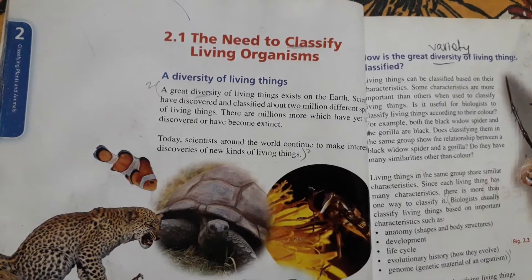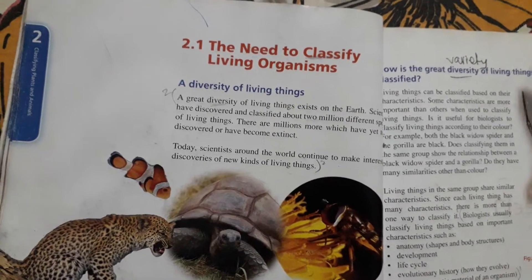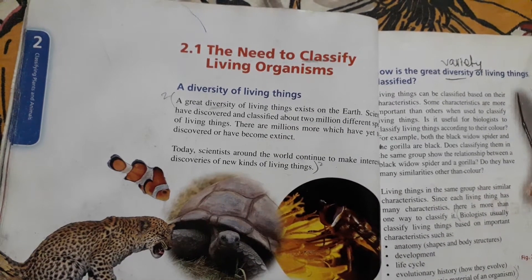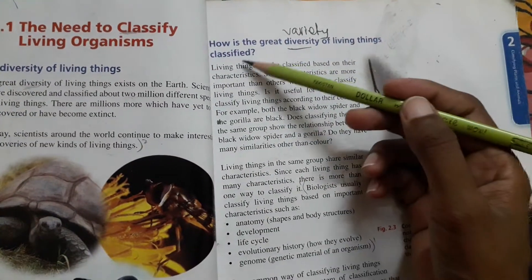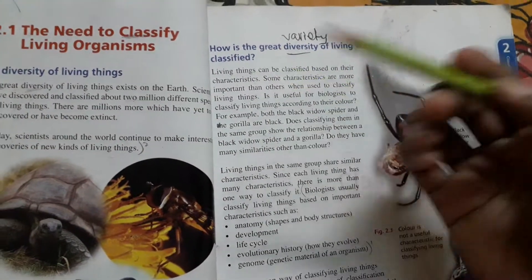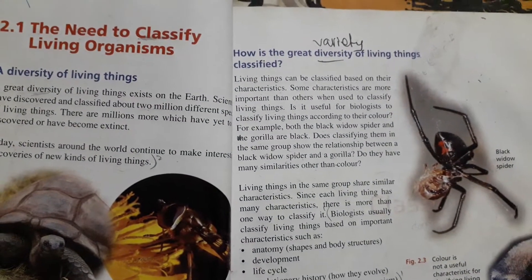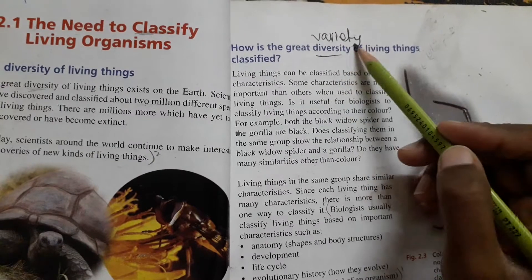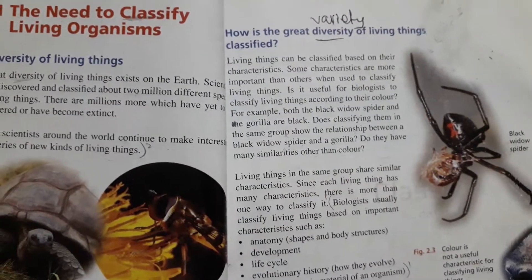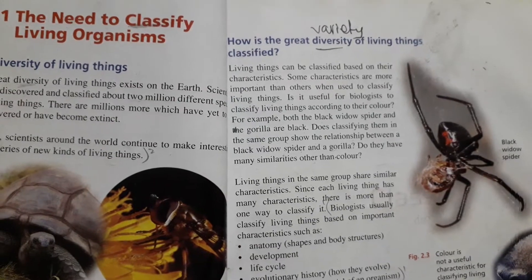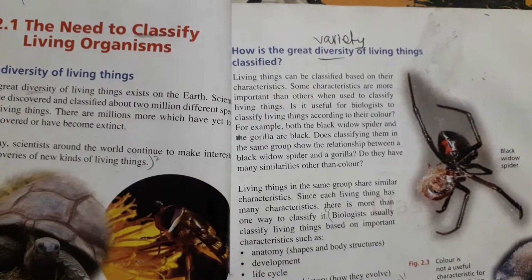Since there are so many varieties, we don't need to study these species individually. That's why they are grouped, and that method is known as classification. How is the great diversity of living things classified? How do we classify the diversity of living things? We decide that living things sharing characteristics should be placed in one group.